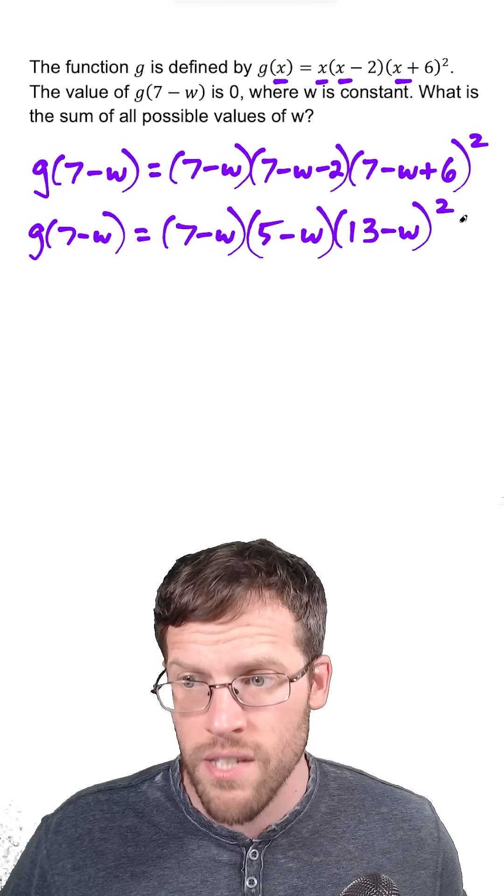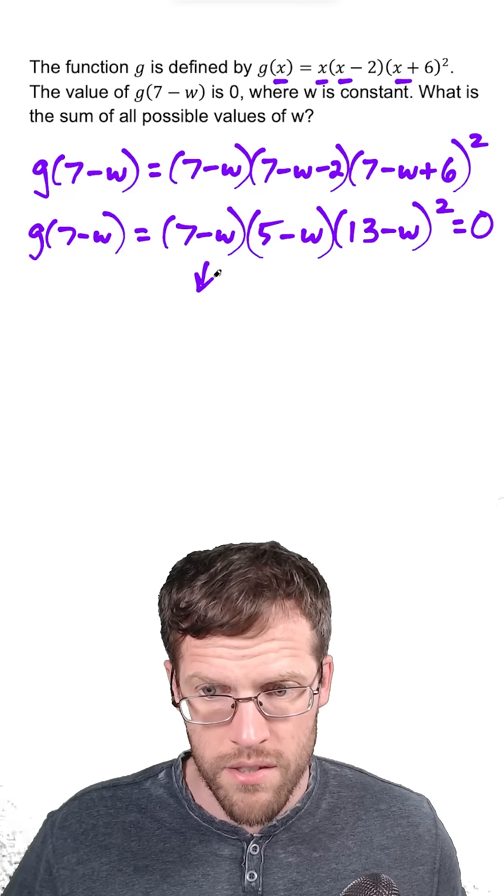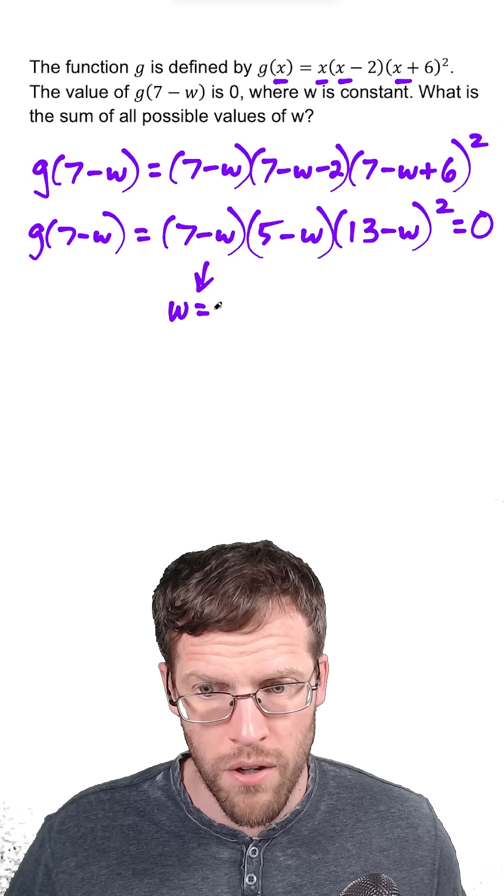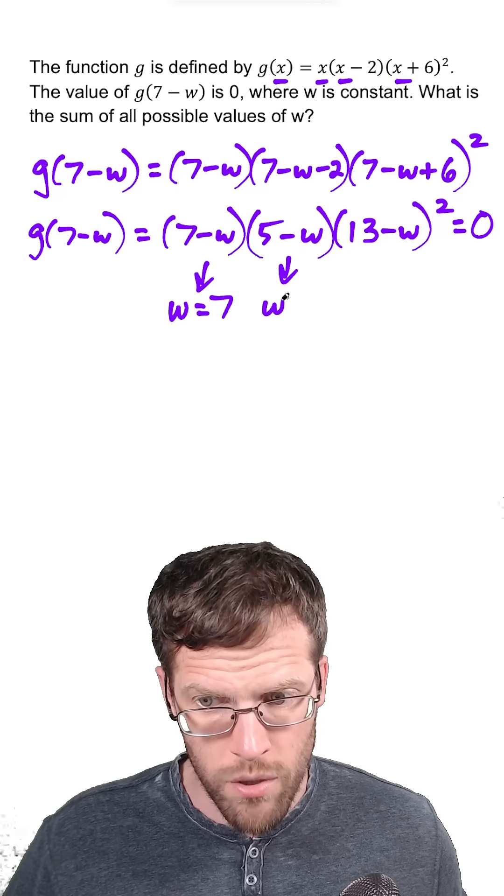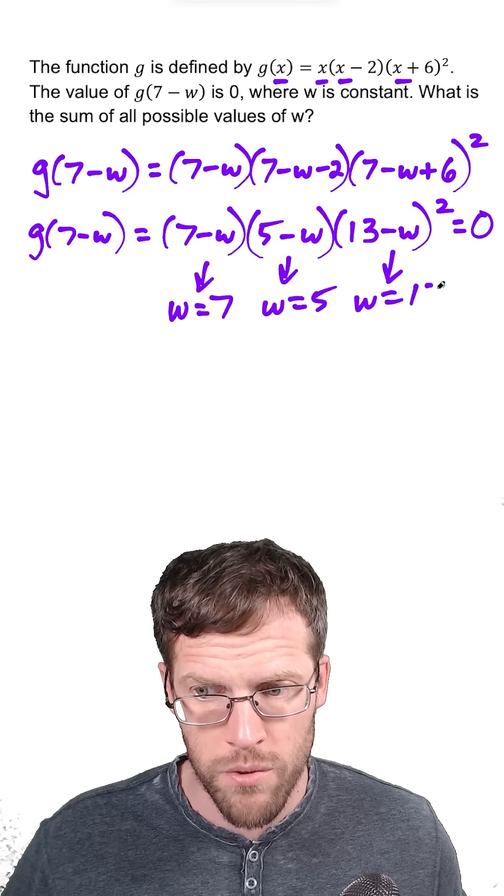So now we're going to set this equal to 0. They told us g of 7 minus W equals 0, where W is constant. The first factor gives us a root of W equals 7. The second one gives us a root of W equals 5, and the last factor gives us a root of W equals 13.